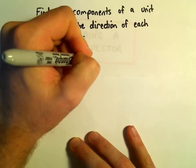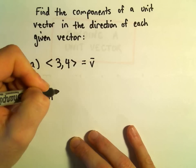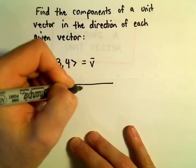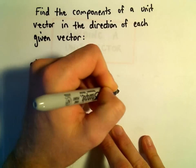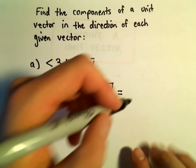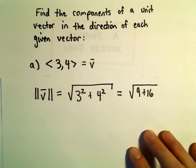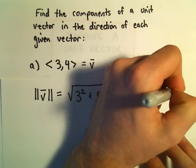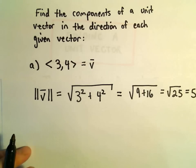We'll call this vector v. The magnitude of vector v - we just take each component and square it, add them together, and square root it. So 3 squared is 9, 4 squared is 16. That gives us the square root of 25, which is simply 5.